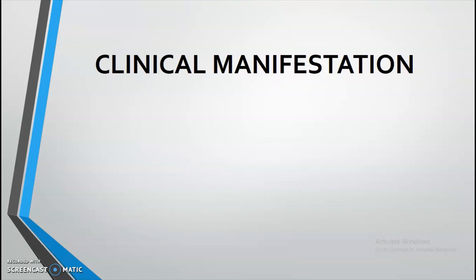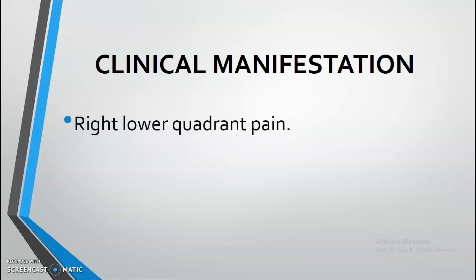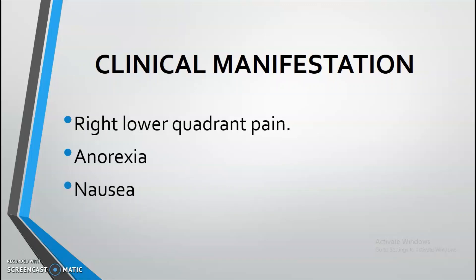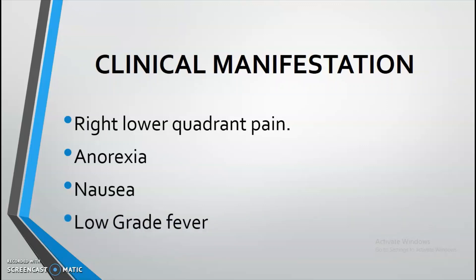What are the clinical manifestations of appendicitis? Number one, and most common, is right lower quadrant pain, also known as pain at the McBurney's point — I'll show you the picture later. Another manifestation is anorexia, or decreased appetite. Another one is nausea — the feeling of wanting to vomit. And of course, low-grade fever, since this is an infection and you would expect the patient to have a fever.